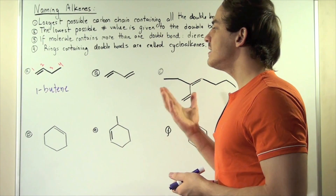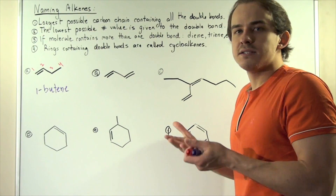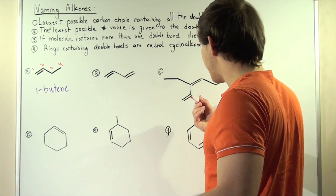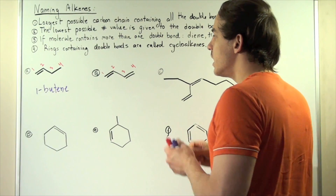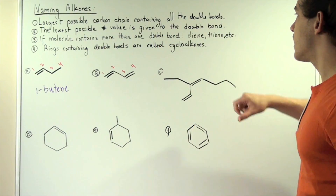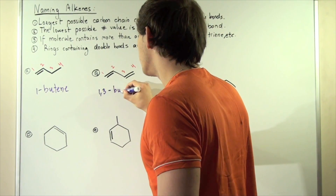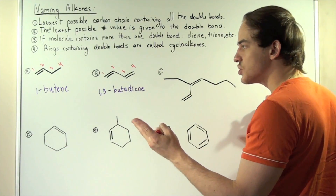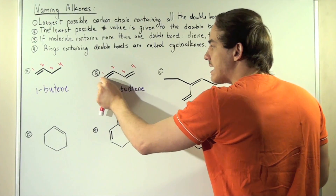Let's go to example B. In example B, we have a symmetrical compound, which means it doesn't matter if we begin on this end or that end — we get the same alkene name. Counting our carbons: carbon one, two, three, and four. Now we have two double bonds, so according to rule three, we name this compound a diene. Our name becomes 1,3-butadiene. The 'diene' part means two double bonds, one on the first carbon and the second on the third carbon, and 'buta' means a four-carbon backbone.